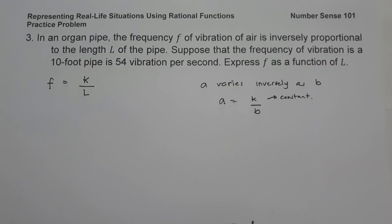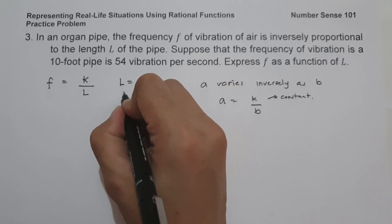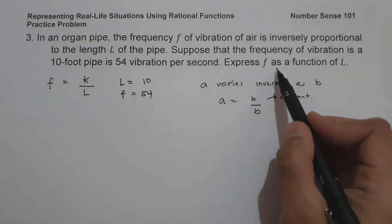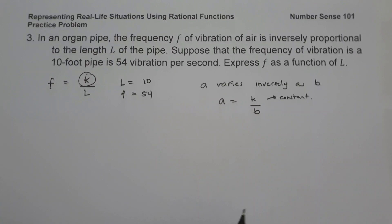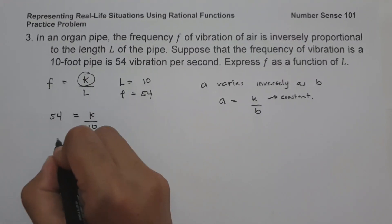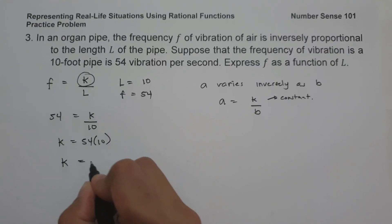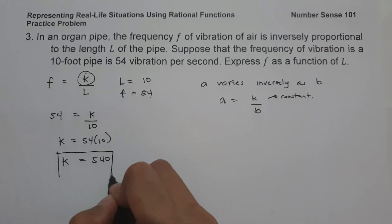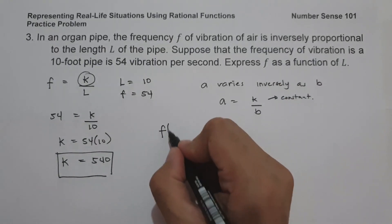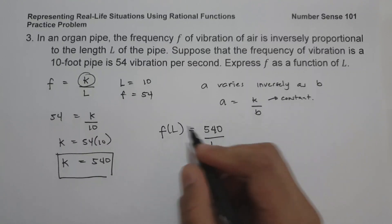Let us identify the given values: length L = 10 and frequency f = 54. To find the constant K, we have 54 = K/10, so K = 54 × 10 = 540. Therefore, to express f as a function of L, we get f(L) = 540/L. This is our answer.